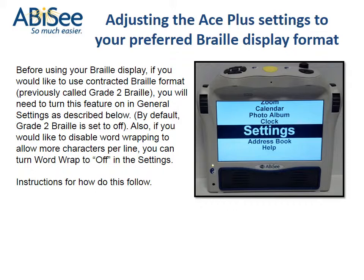Adjusting the Ace Plus settings to your preferred Braille display format. Before using your Braille display, if you would like to use contracted Braille format, previously called Grade 2 Braille, you will need to turn this feature on in general settings. By default, Grade 2 Braille is set to off. Also, if you would like to disable word wrapping to allow more characters per line, you can turn Word Wrap to off in the settings.